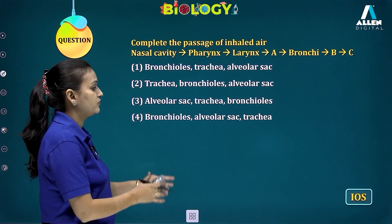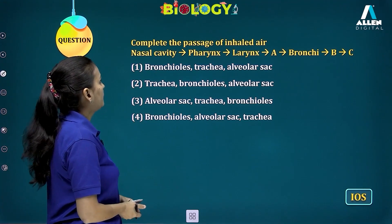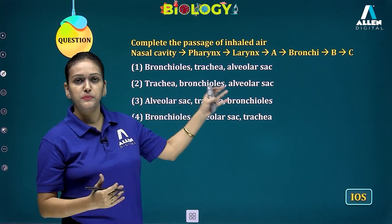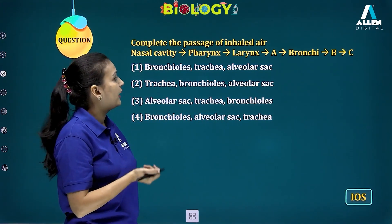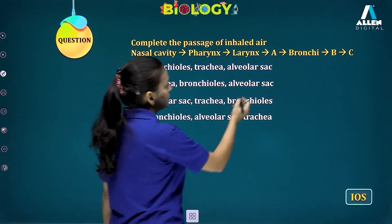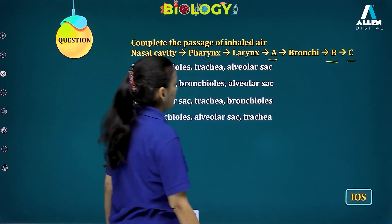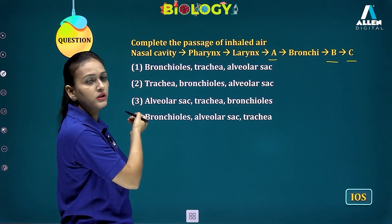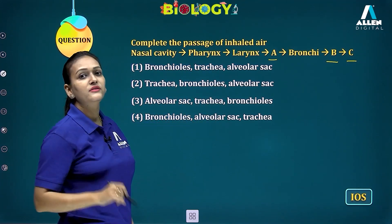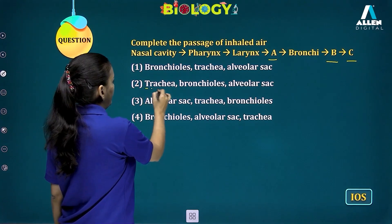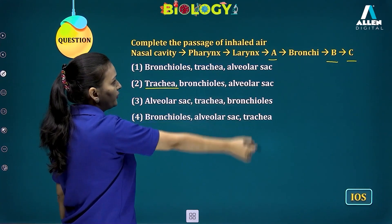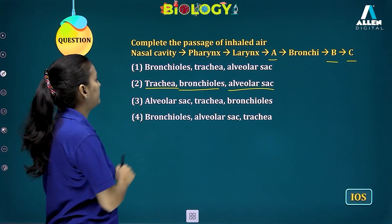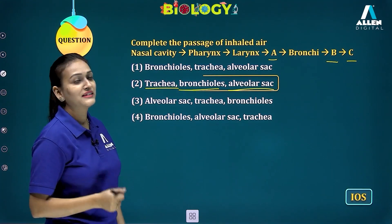An IOS Olympiad question: complete the passage of inhaled air. Inhaled air passes from the nasal cavity into the pharynx, then into the larynx, then into the trachea (so A is trachea), then from the trachea into the bronchi, from the bronchi into the bronchioles, and from the bronchioles into the alveolar sac. Option two is the correct answer.